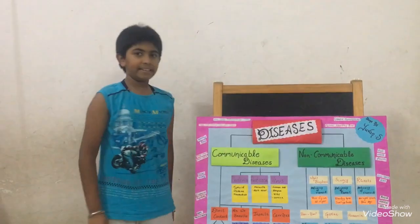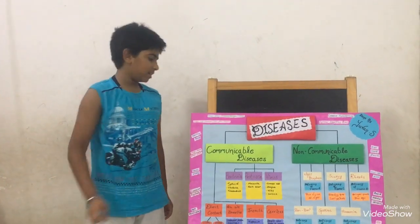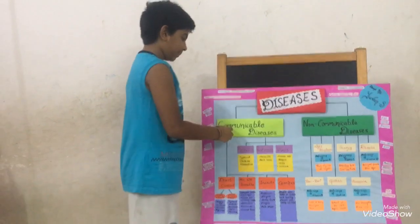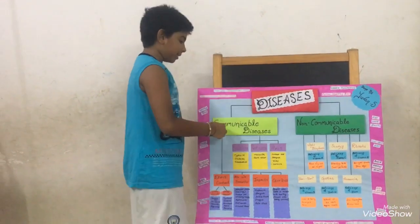Disease is an abnormal condition. There are two types of disease: communicable disease and non-communicable disease.